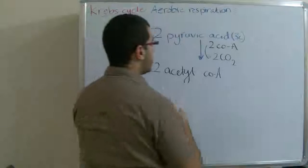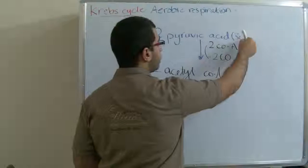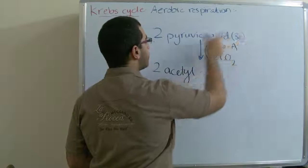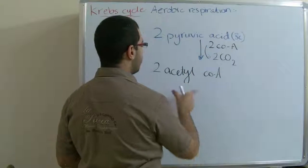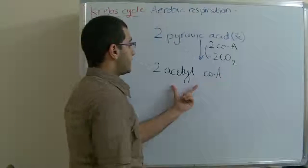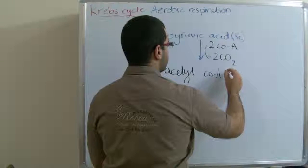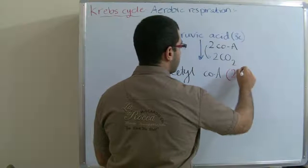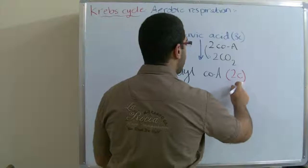Accordingly, as we have lost two carbon atoms from the two pyruvic acid molecules, we have here each two Acetyl CoA with a carbon content of two atoms.